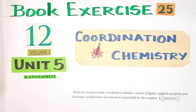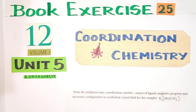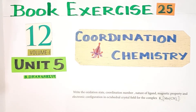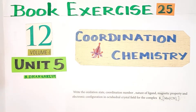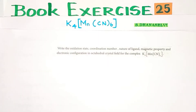Hello students. We are in the Coordination Chemistry chapter. Book exercise question number 25 is answered in this video. We will discuss the question first. The question says: Write the oxidation state, coordination number, nature of ligand, magnetic property, and electronic configuration in octahedral crystal field for the complex K4Mn(CN)6.